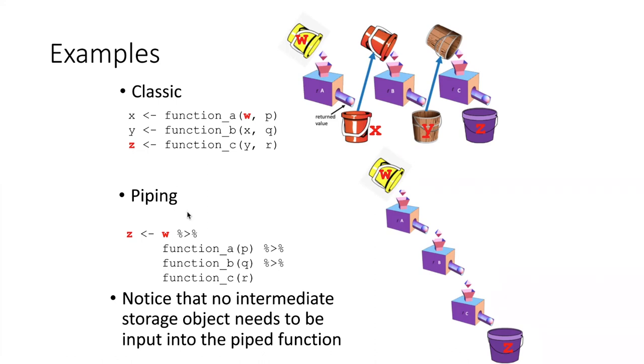In the piping approach we use the pipe operator, which is composed of a percent sign, a greater than sign, and a percent sign. We simply say take the first data structure and pipe it into the first function. Take the output, pipe it into the second function. Take the output, pipe it into the third function. Then the output of the third function ends up getting assigned to the last named data structure.